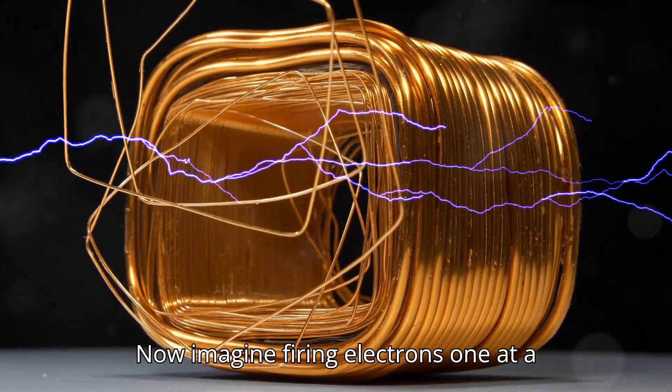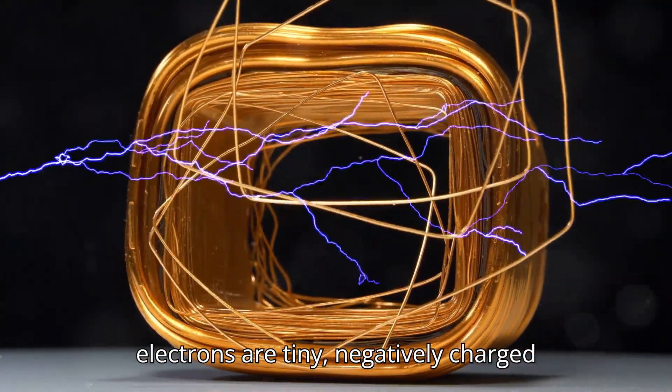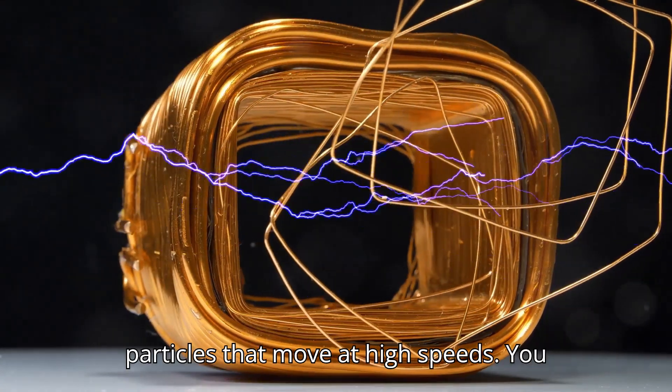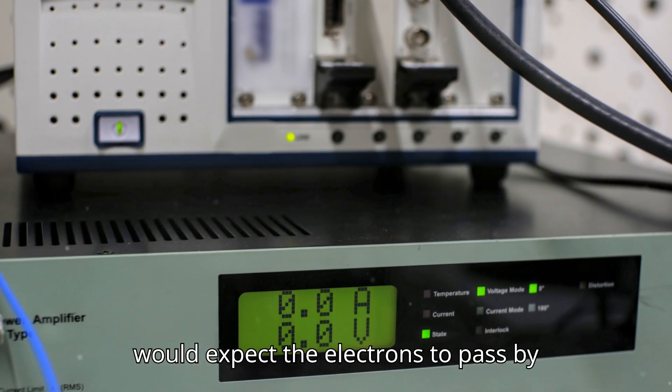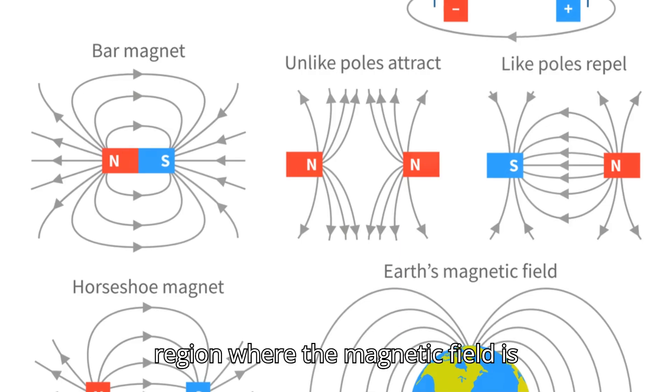Now imagine firing electrons one at a time past this solenoid. These electrons are tiny, negatively charged particles that move at high speeds. You would expect the electrons to pass by unaffected since they are traveling in a region where the magnetic field is negligible.